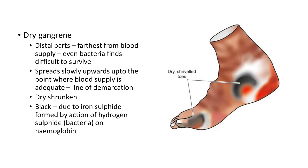Dry gangrene mostly occurs in distal parts of the limb — the parts farthest from blood supply. Because of scarce blood supply and scarcity of nutrition, even bacteria find it difficult to survive there. This type of gangrene spreads slowly upwards up to a point where there is adequate blood supply.